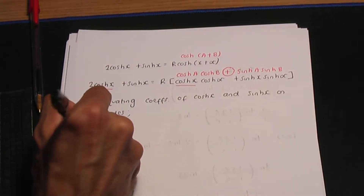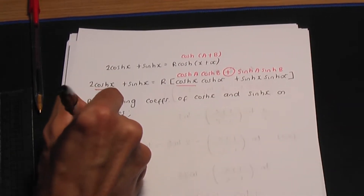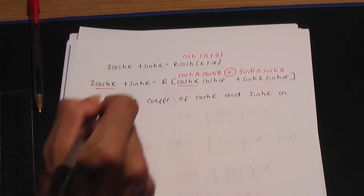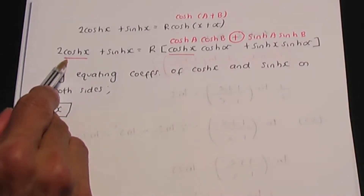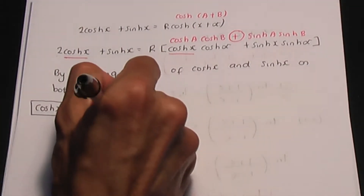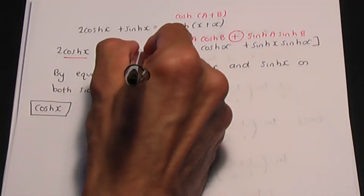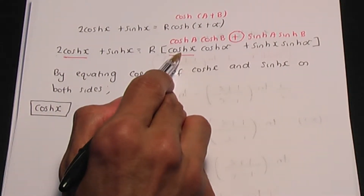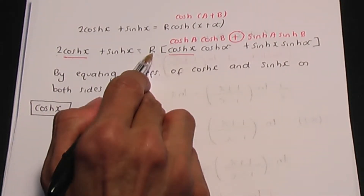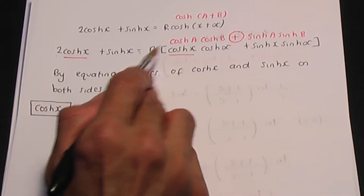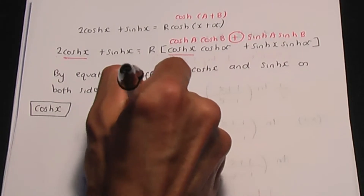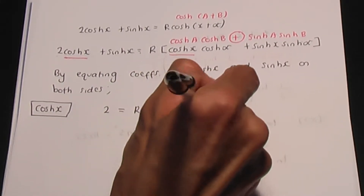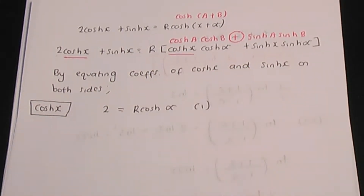Since hyperbolic cos appears first, equate those coefficients first. On the left I have 2, and that equals on the right the coefficient of hyperbolic cos, which is r hyperbolic cos alpha. Call that equation 1.